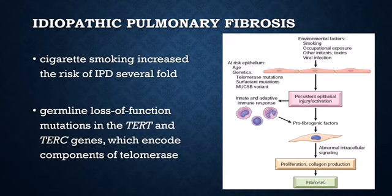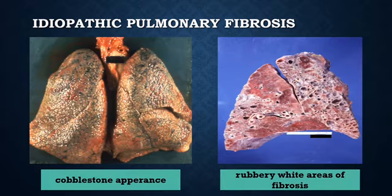IPF is a disease of older individuals, rarely appearing before the age of 50 years. Grossly, the pleural surfaces of the lung are cobblestone as a result of the reduction of scars along the interlobular septa. The cut surface shows firm, rubbery white areas of fibrosis, which occurs preferentially in the lower lobes, the subpleural regions, and along the interlobular septa.